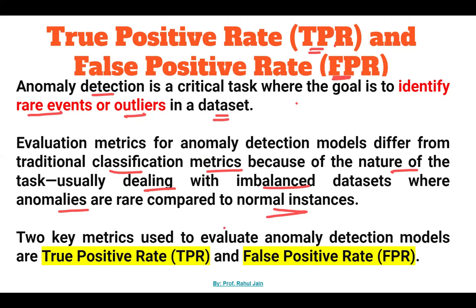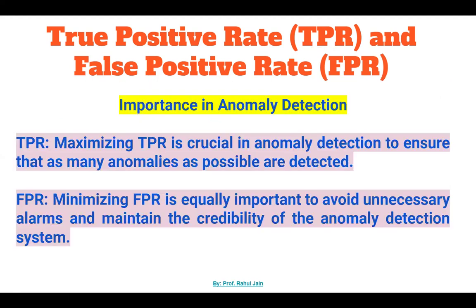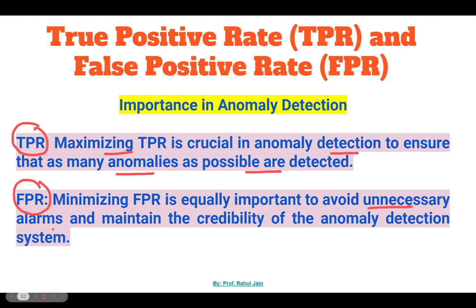Two key metrics used in evaluation of anomaly detection are true positive rate and false positive rate. True positive rate helps to maximize anomaly detection to ensure as many anomalies as possible are identified in the dataset. False positive rate is equally important — minimizing it avoids unnecessary alarms and maintains the credibility of the anomaly detection system.